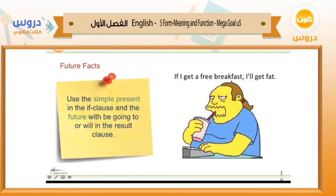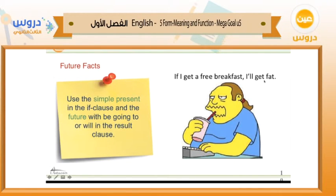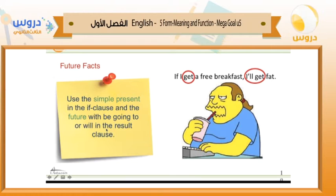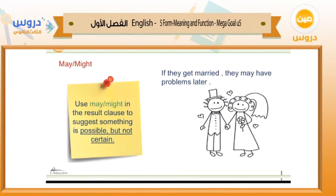What about future facts? Consider: 'If I get a free breakfast, I'll get fat.' This is a fact whose result will happen in the future. So in the if-clause, we use simple present tense — 'if I get' — but in the result clause, we use the future form with 'will' or 'be going to' plus the base form — 'I'll get fat.'